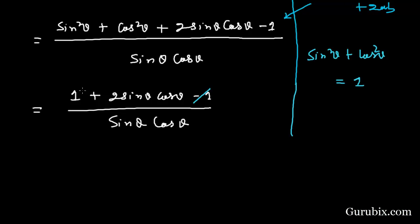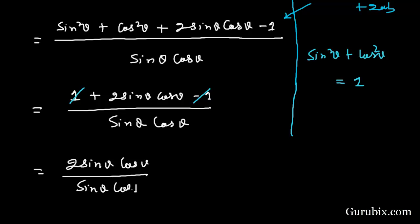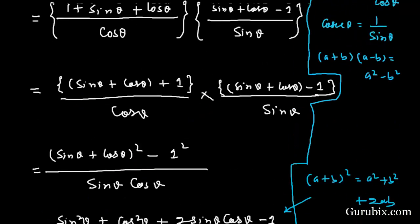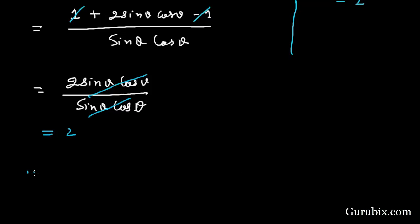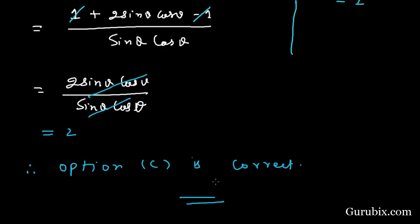The +1 and -1 cancel out, leaving 2 sin θ cos θ / (sin θ cos θ), which simplifies to 2. Therefore, option C is correct. This is the solution of the question. Thank you.